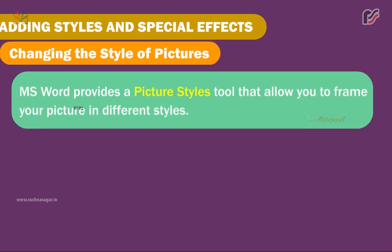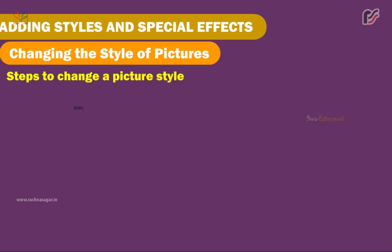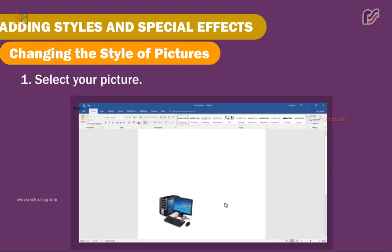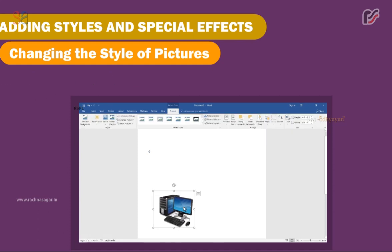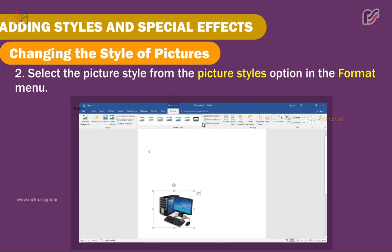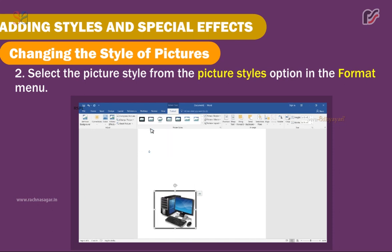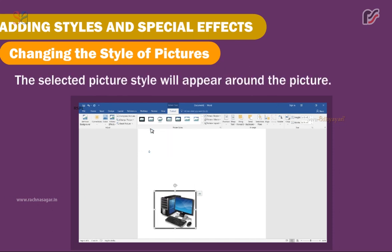Adding Styles and Special Effects — Changing the Style of Pictures. MS Word provides a picture style tool that allows you to frame your picture in different styles. Steps to change a picture style: 1. Select your picture. 2. Select the picture style from the Picture Styles option in the Format menu. 3. The selected picture style will appear around the picture.